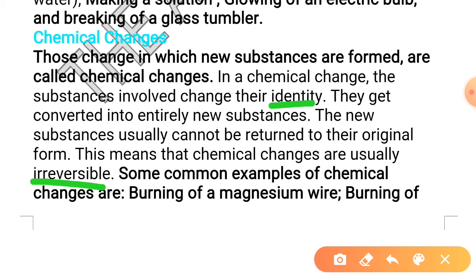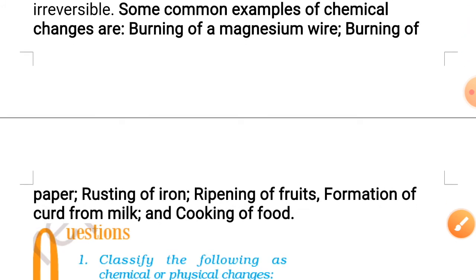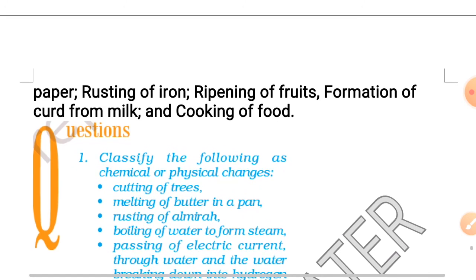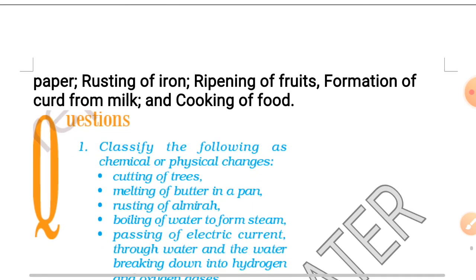Now, look at some examples. Burning of magnesium wire. When magnesium wire burns, it will form its compound called magnesium oxide. Burning of paper. When paper burns, a chemical reaction will occur and this change cannot be reversed. Rusting of iron. As I earlier told you, ripening of fruit, formation of curd from milk, cooking of food. All these are chemical changes.